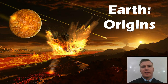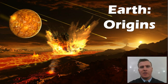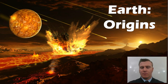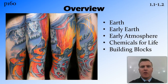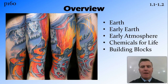In this video we're going to look at Earth's origins and how those origins were conducive to forming the first biological molecules. We're going to talk about the Earth in general, then look at some of the conditions in the early Earth, including the early atmosphere, and how this atmosphere contained the chemicals for life, which are the building blocks for all complex life as we know it today.